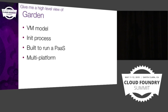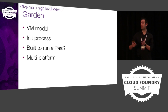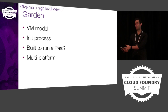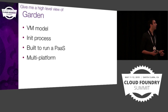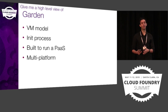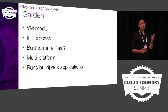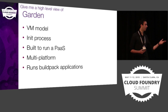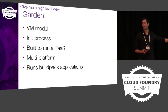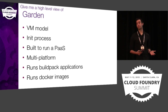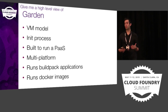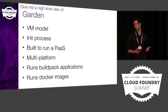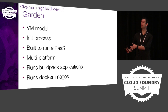Garden is built to run a PaaS. It's also multi-platform — Garden is an abstraction that you can build multiple backends for. We have a Garden Linux backend and a Garden Windows backend. The reason that works is because it's quite a well-chosen, high-level abstraction. It was built to run Buildpack applications, but it also runs Docker images. We use Docker's code to pull the images down and then run them inside a Garden container — so it's kind of the best of all worlds.